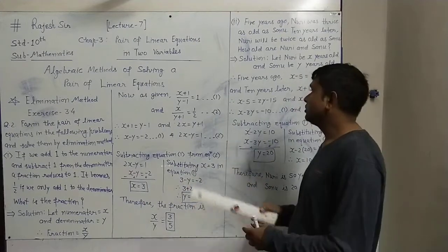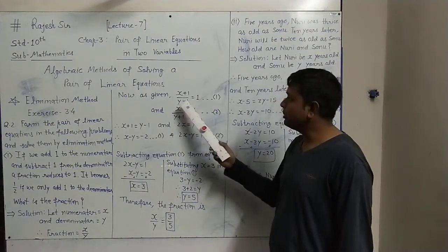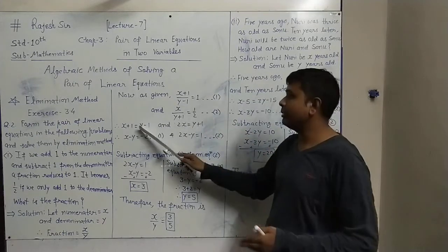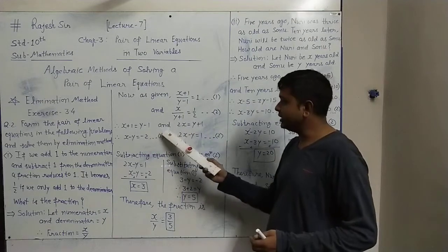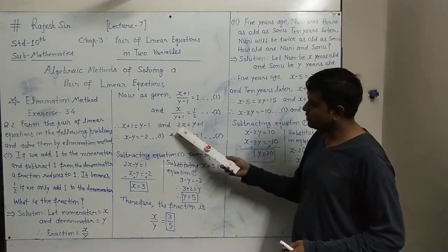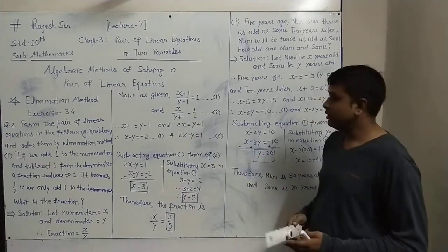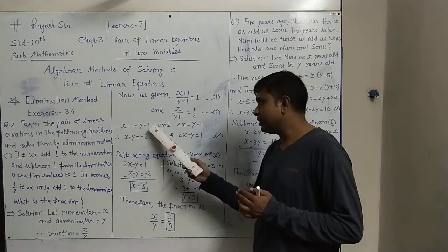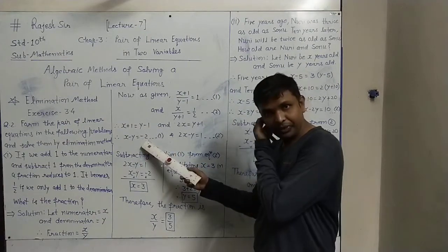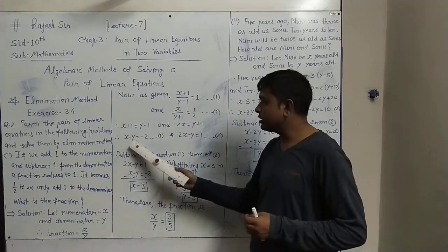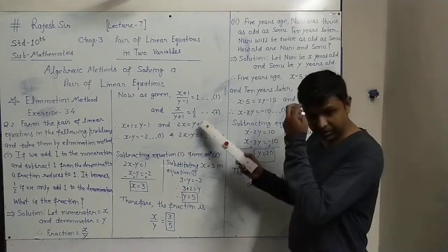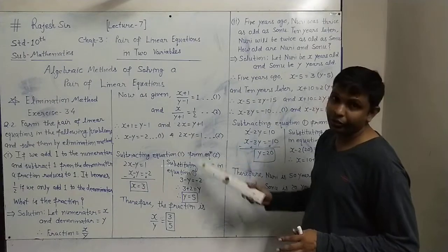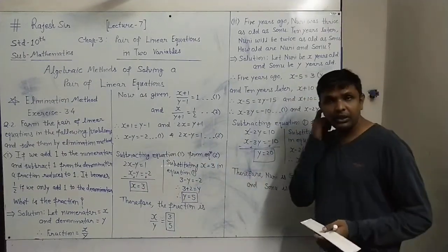Now equations 1 and 2 will be simplified. Cross-multiplying equation 1: x+1 = y−1, which gives x minus y = −2. Similarly, cross-multiplying equation 2: 2x = y+1, which gives 2x minus y = 1. So the simplified forms are equation 1: x − y = −2, and equation 2: 2x − y = 1.